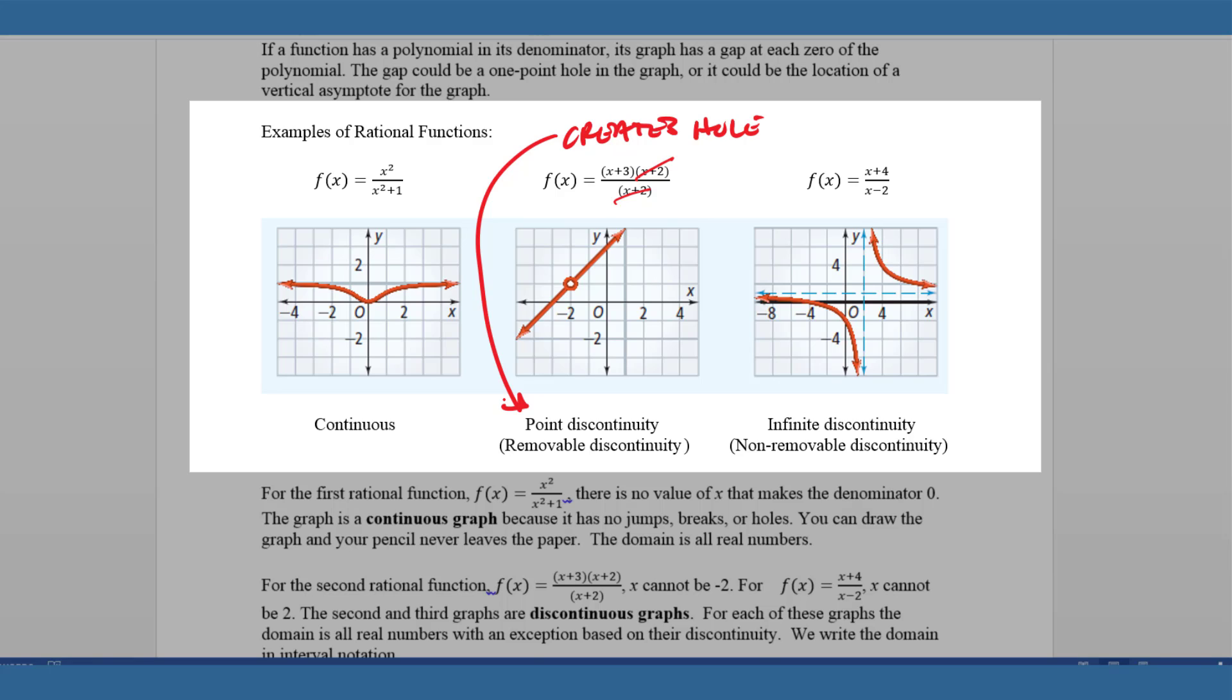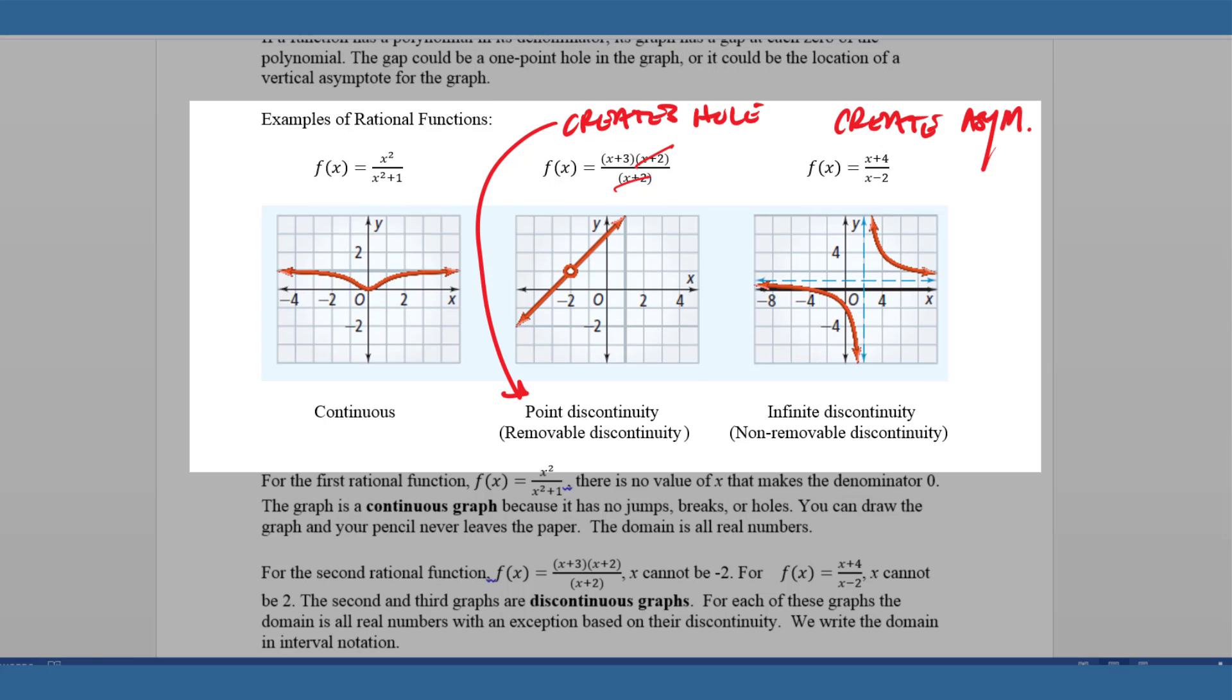If you look at the third example, you see that the denominator does not cancel out with anything on the numerator, but there is a value that makes the function undefined. In this case, we're going to create an asymptote. When we create an asymptote, that's infinite discontinuity or what we would call non-removable discontinuity.